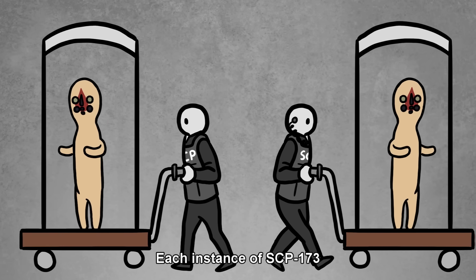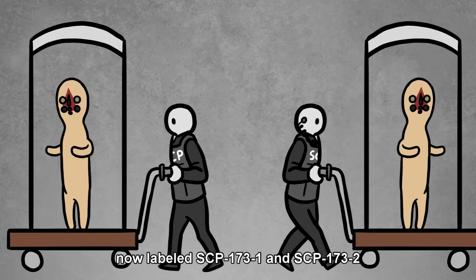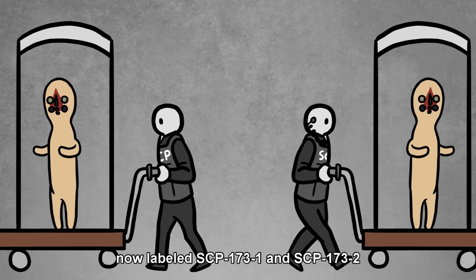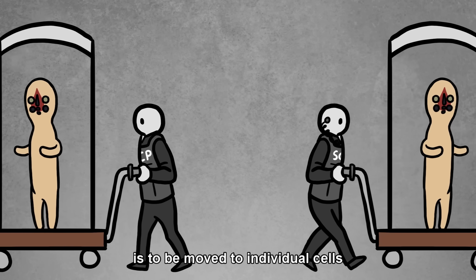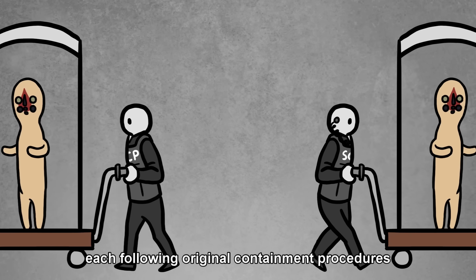Each instance of SCP-173, now labeled SCP-173-1 and SCP-173-2, is to be moved to individual cells each, following original containment procedures.